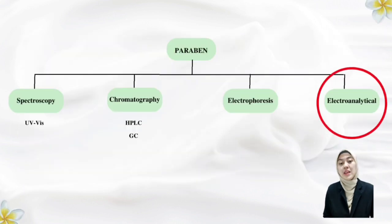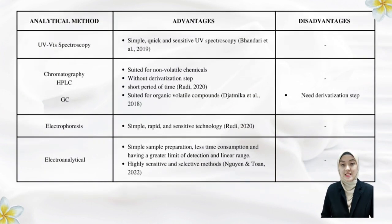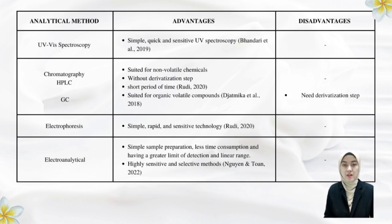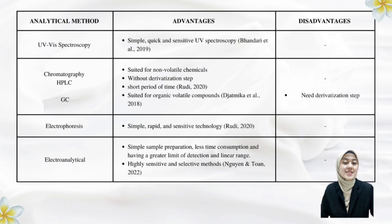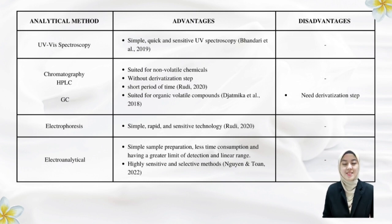Spectroscopy, chromatography, electrophoresis and electroanalytical methods are the most commonly used in analysing parabens. By using electroanalytical methods, it offers advantages over other analytical techniques in terms of sample preparation, time consumption, and having a greater limit of detection and linear range. Furthermore, it is highly sensitive since the limit of detection and quantification are lower, at 0.2 micromolar and 0.7 micromolar respectively. Electroanalytical methods are also selective for detecting organic substances.